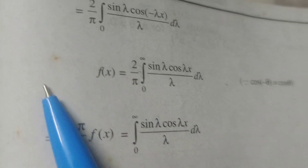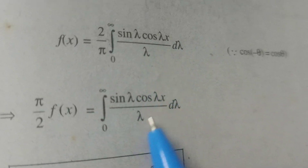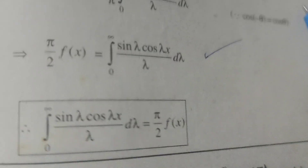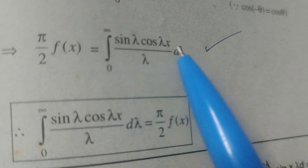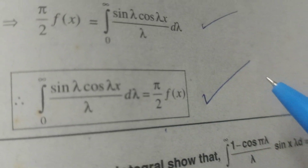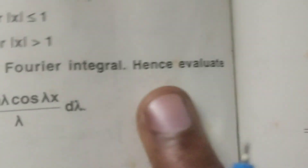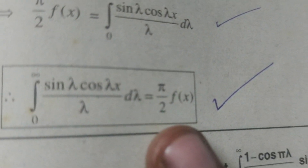Transposing 2/π to the left-hand side: (π/2) · f(x) = integral from 0 to ∞ of (sin λ · cos λx) / λ dλ. Hence the required result of the given problem is established, and the Fourier integral is evaluated. The value is π/2 · f(x).